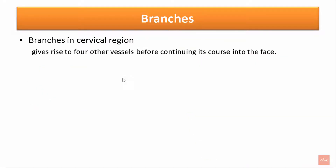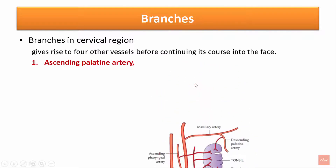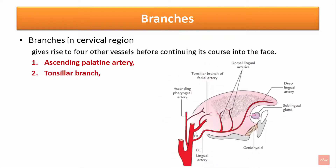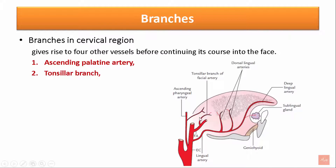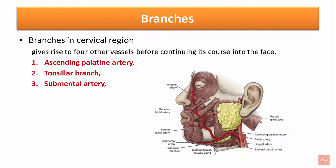The branches in the cervical region: the facial artery in the cervical region gives rise to four vessels before continuing onto the face. The ascending palatine artery supplies the tonsils, the superior constrictor muscle of the pharynx and the auditory tube. The tonsillar branch supplies the palatine tonsil. The submental artery supplies the submental muscle and skin over the submental region. And the glandular branches supply the submandibular gland.